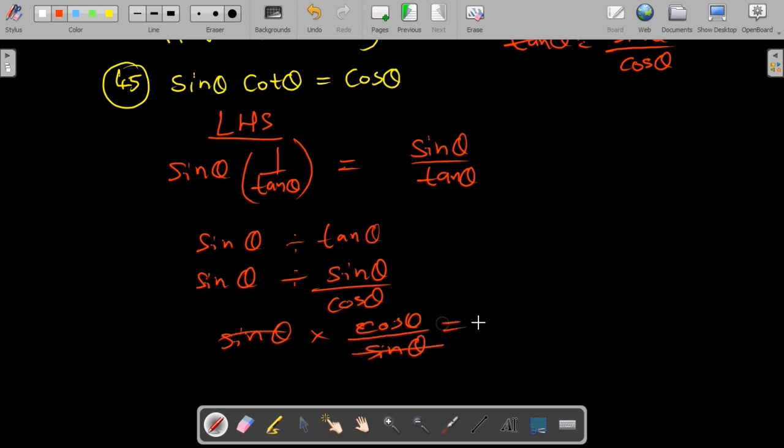You can then cancel that and have cosine, and this cosine is now equal to the right hand side and we've proven our identity.